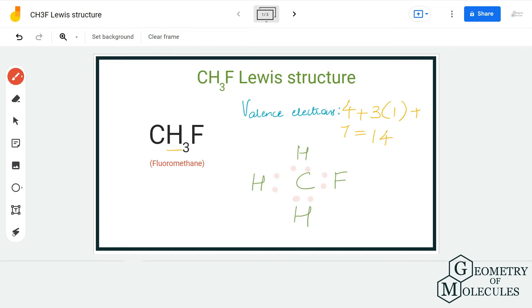Now if you look at the structure closely, all hydrogen atoms have complete outer shells because they each have two valence electrons. And carbon has a complete octet because it has eight valence electrons in its outer shell. So the rest six valence electrons will be placed around fluorine atom so that it also has complete octet.